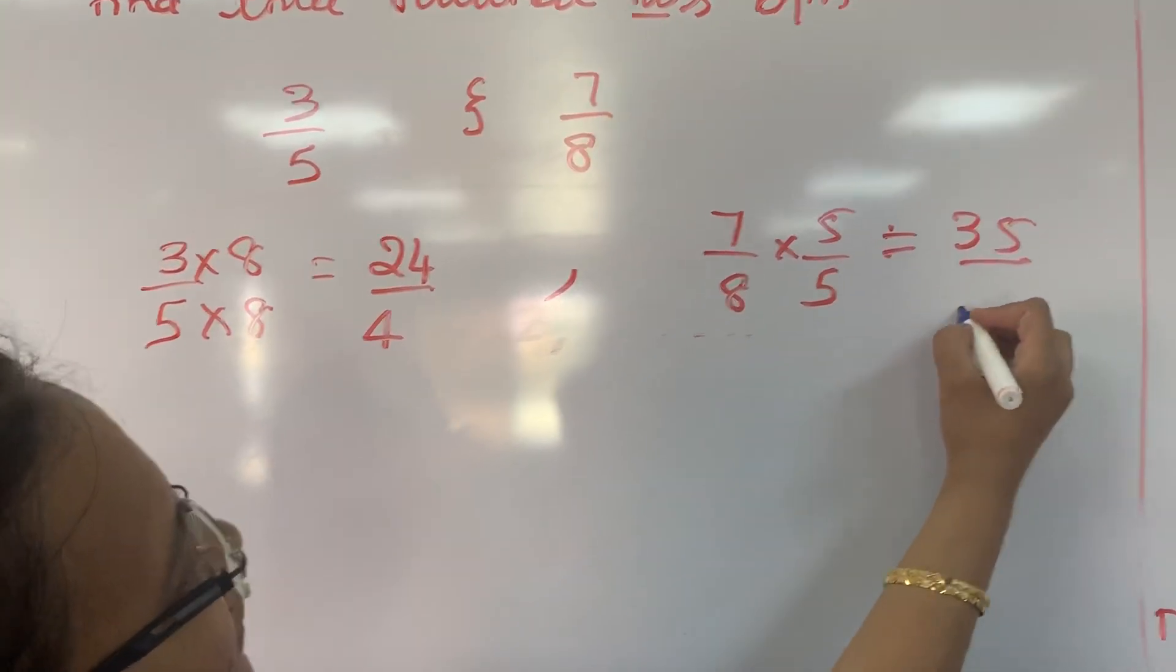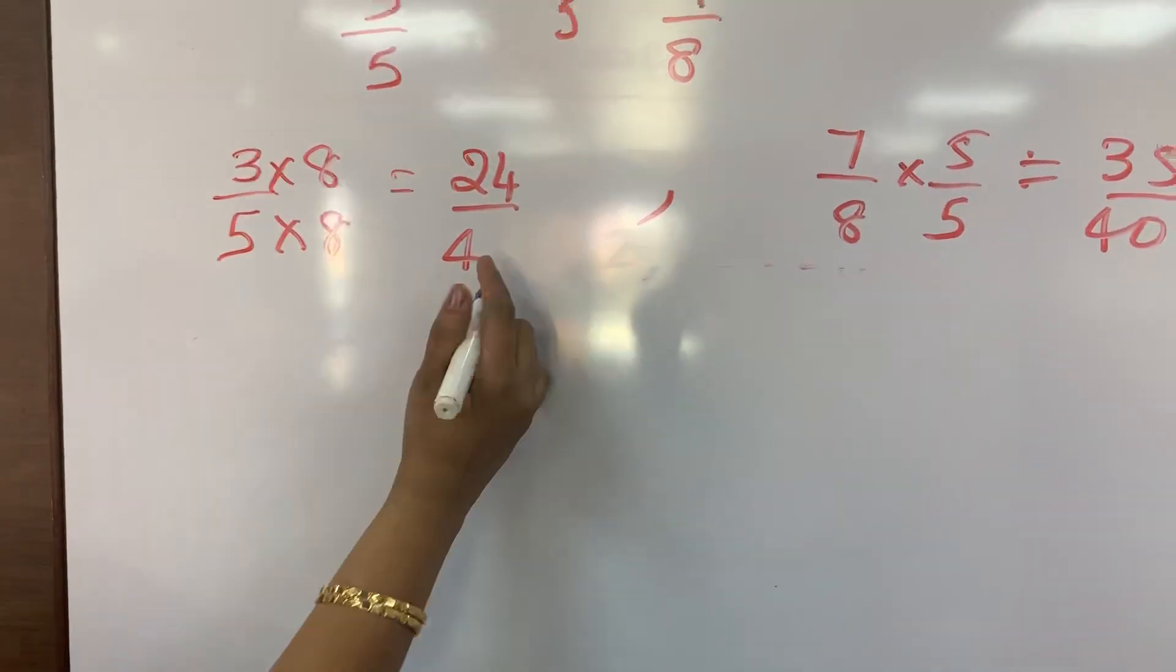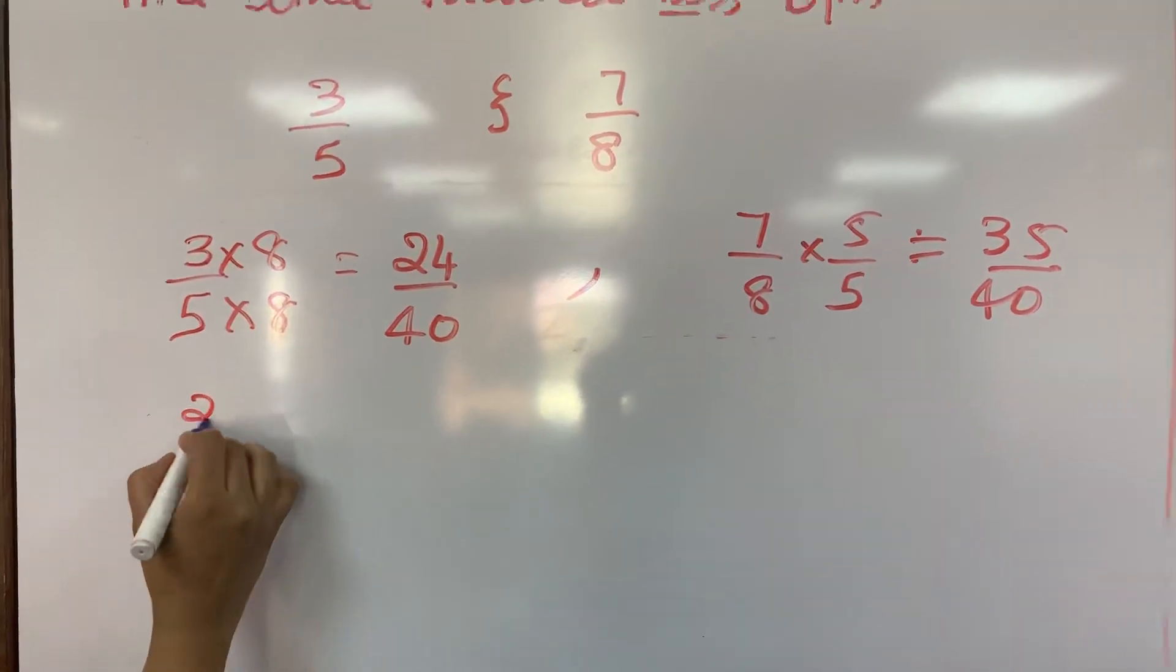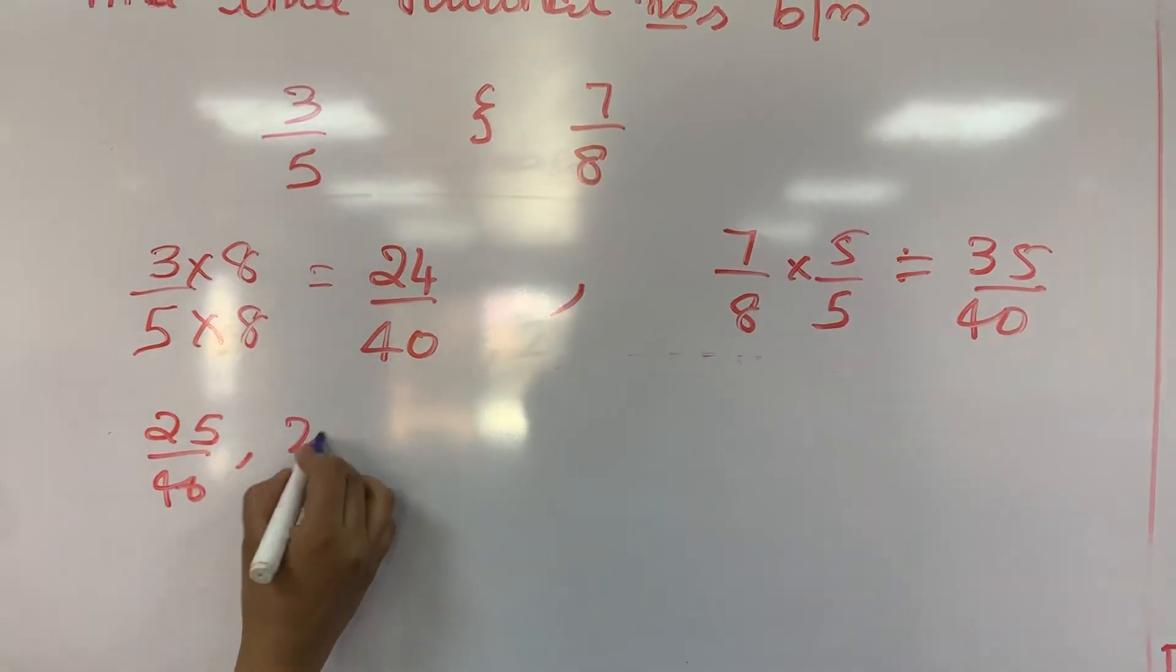35 by 40. Now you can write so many rational numbers in between this. So it is 25 by 40, 26 by 40, up to 34 by 40. So many you can write.